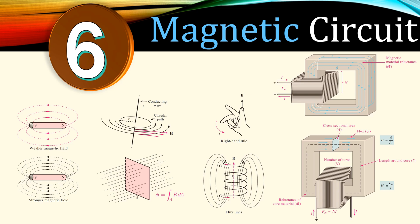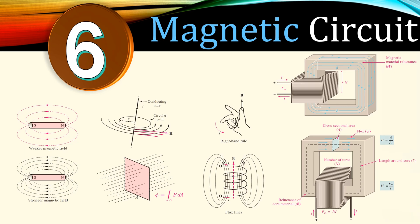Hi everyone and welcome to a new video about magnetic circuits. This is example number six, where I will discuss a situation where we have a permanent magnet also in our magnetic system.